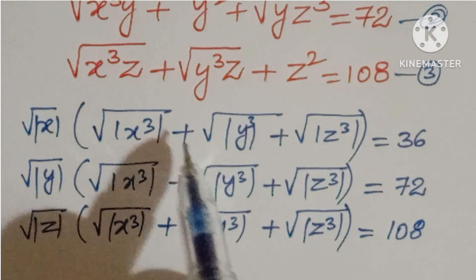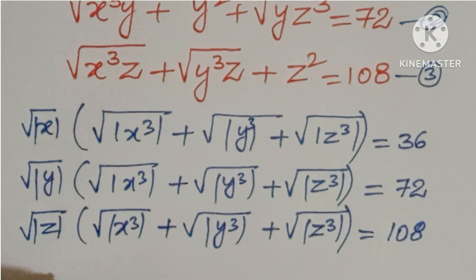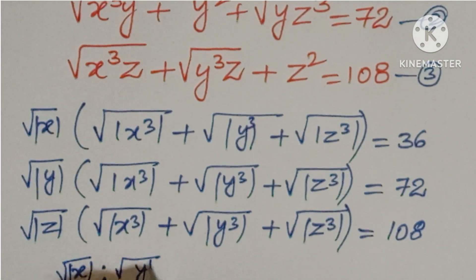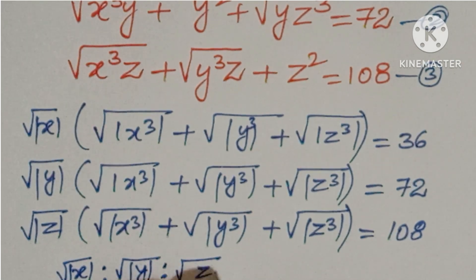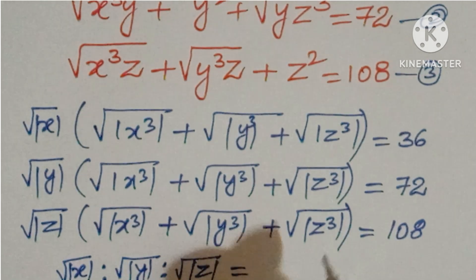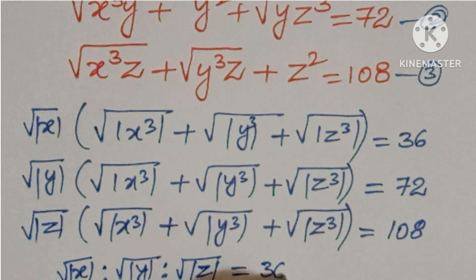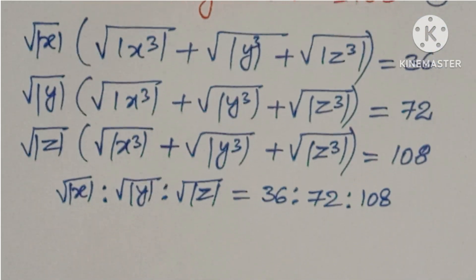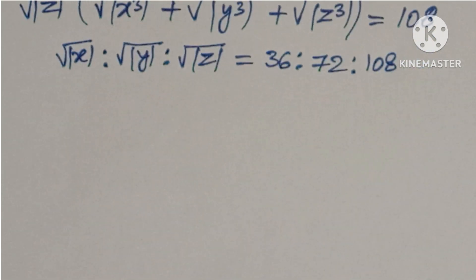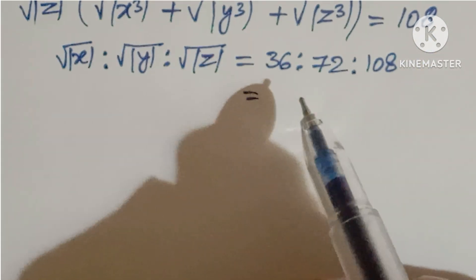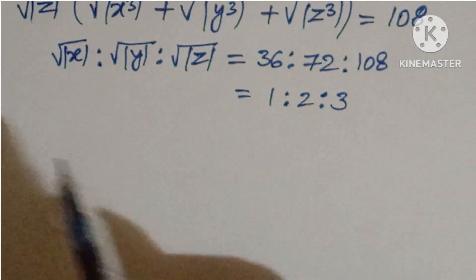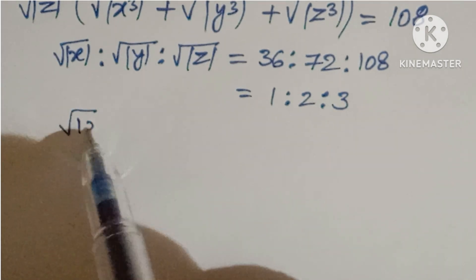So the three left-hand side expressions are the same. From the values 36, 72, and 108 you can write the ratio as 1 : 2 : 3. Therefore √(|x|³) : √(|y|³) : √(|z|³) = 1 : 2 : 3.